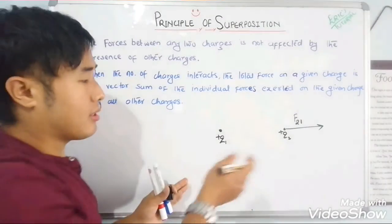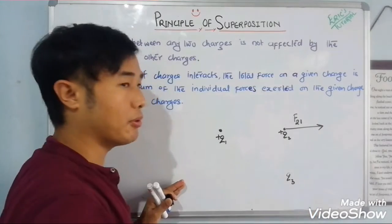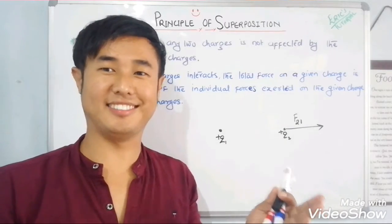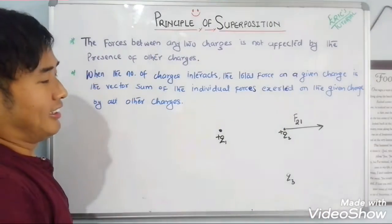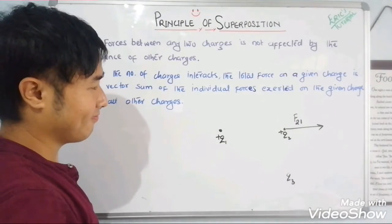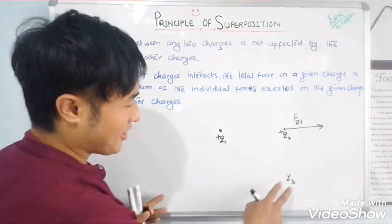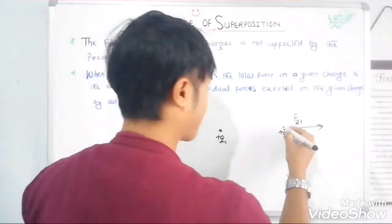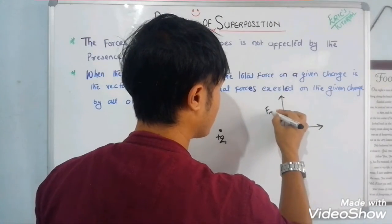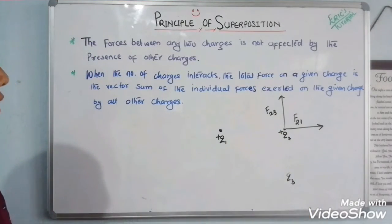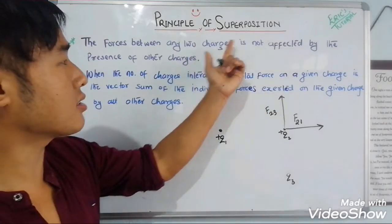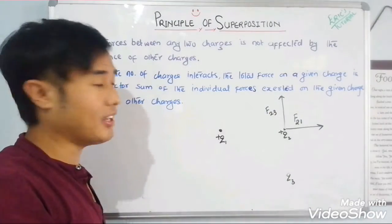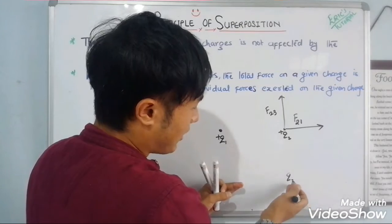After some time, let me introduce another charge — suppose q3 is introduced. The way q3 charge is introduced: q3 is going to exert a force on q2 as well — this force is F23. But the forces between any two charges is not affected by the presence of other charges.